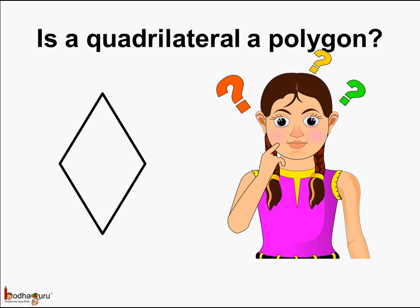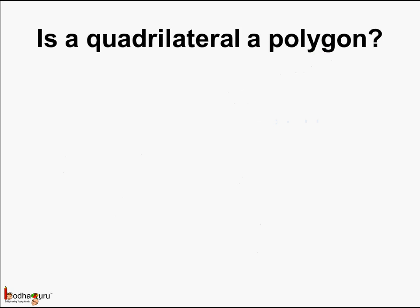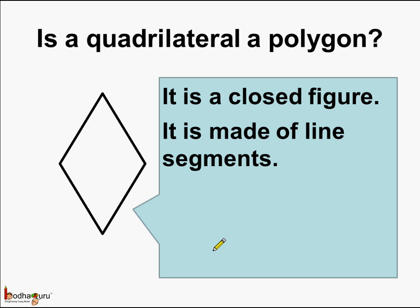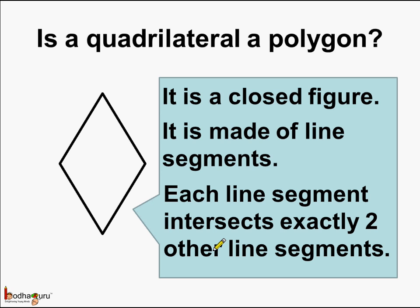Now a question might come, is a quadrilateral a type of polygon? Let us see. Yes, this is a closed figure. It is made of four line segments. And also the important thing here is,